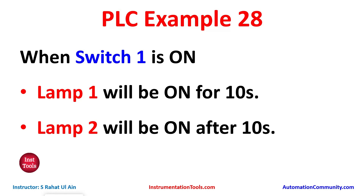Example 28: When switch 1 is on, lamp 1 will be on for 10 seconds and lamp 2 will be on after 10 seconds. For switch 1 we will use a normally open contact, then to turn on lamp 1 for 10 seconds we will use a timer known as TP (Time Pulse), and for lamp 2 to be on after 10 seconds we will use a timer known as TON.